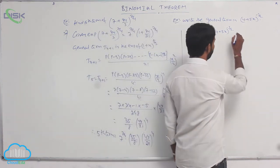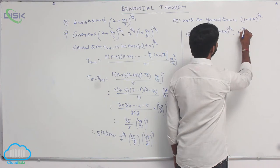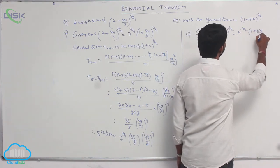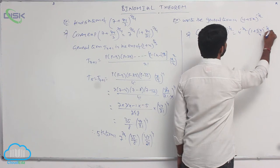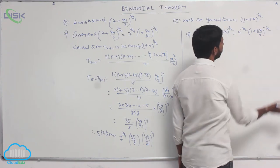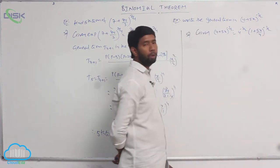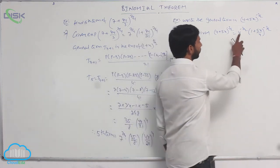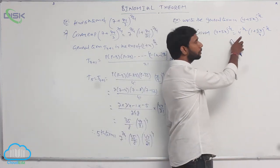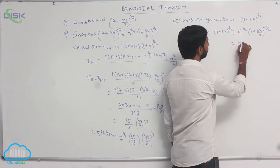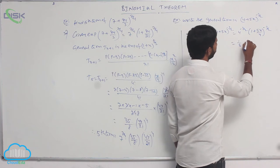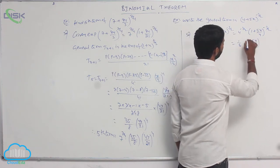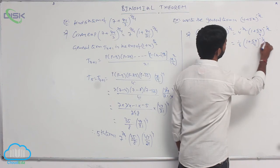Here 4 is common, so it is 4 power −3/2 · (1 + 5x/4) whole power −3/2. Since 4 = 2², we get 2² whole power −3/2 = 1/8, giving (1/8) · (1 + 5x/4) whole power −3/2.